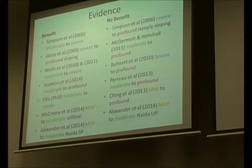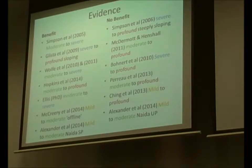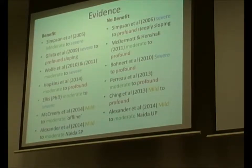There's also a big difference in how people set the frequency compression. It could be that they use prescription targets — DSL or NAL — and the cutoff and compression ratios could be set to very different parameters. For example, if someone had a moderate hearing loss and appeared in many of these studies, they would likely have different hearing aid settings, making it very difficult to combine the evidence to predict benefit from frequency compression based on hearing loss.